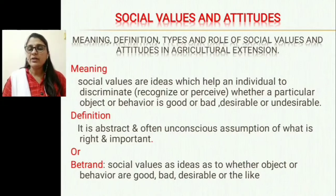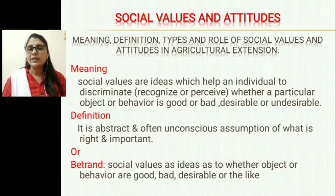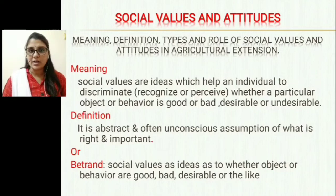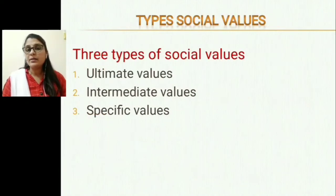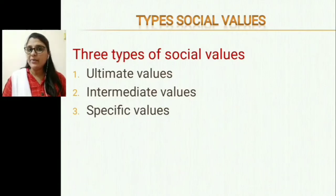According to Bittrand, social values are ideas as to whether objects or behaviors are good, bad, desirable or the like. So social values help the individual determine whether a particular object or behavior is good or bad, desirable or undesirable. There are three types of social values: ultimate values, intermediate values, and specific values.